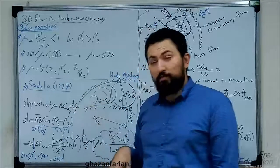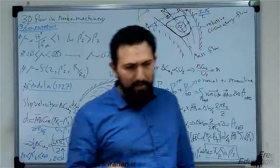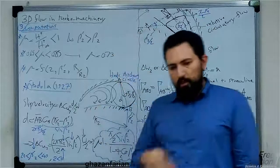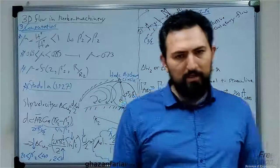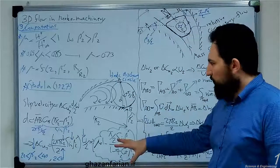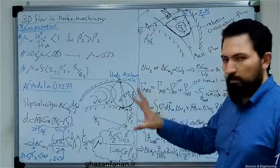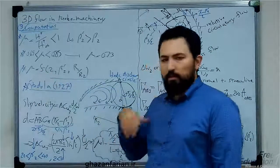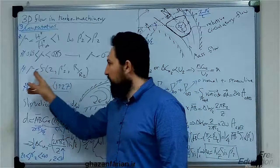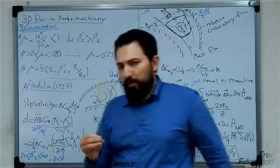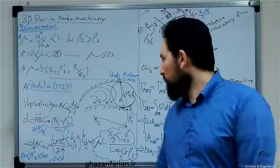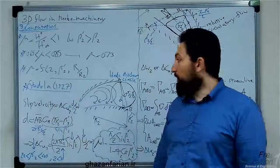The slip factor also depends on the ratio of the inlet radius R sub 1 over the outlet radius R sub 2. Let's start to compute a relation for the slip factor, and then I will discuss the effect of these three parameters on its magnitude. The oldest relation for computing the slip factor is known as Stodola's relation, from 1927.